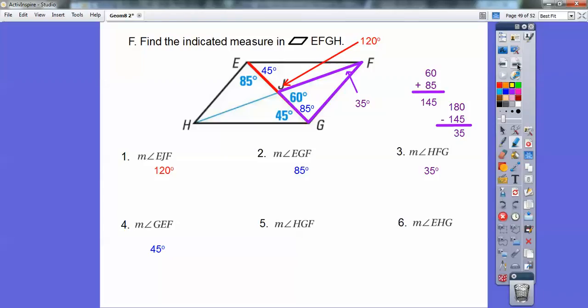And then right here, number five, HGF. That's this bottom angle, HGF, this bottom right hand corner. So I'm going to use the angle addition postulate and add 45 plus 85 and get to 130. And then this last angle, EHG, that's this other angle over here, this dude right here.